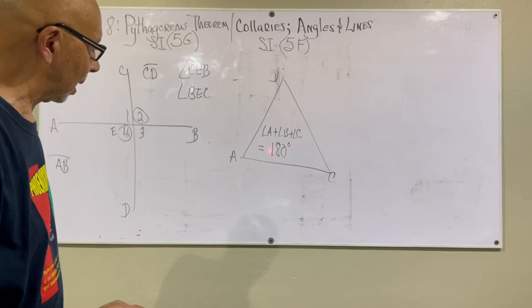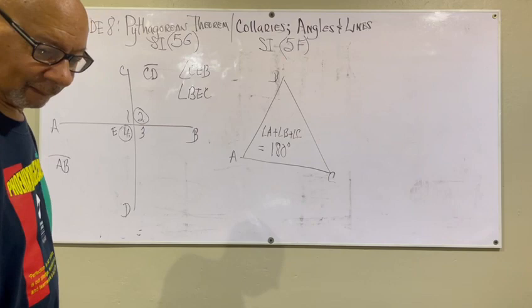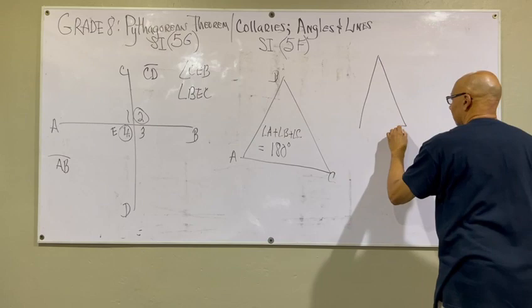In any triangle, the three angles will add up to a sum of 180. So now I'm going to give you an example. And we'll talk about some special applications.